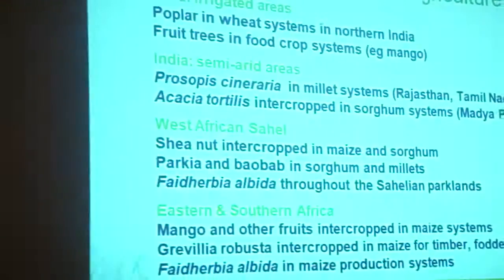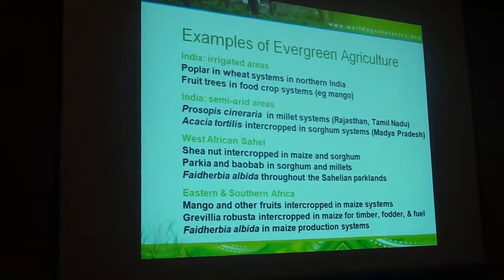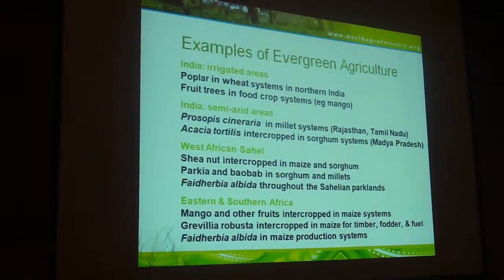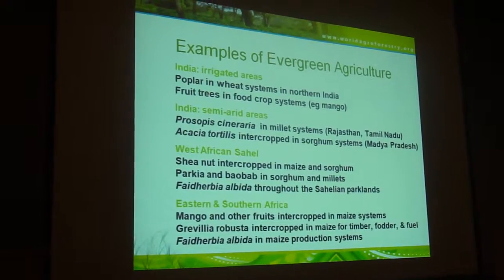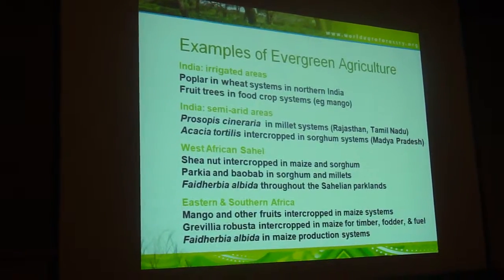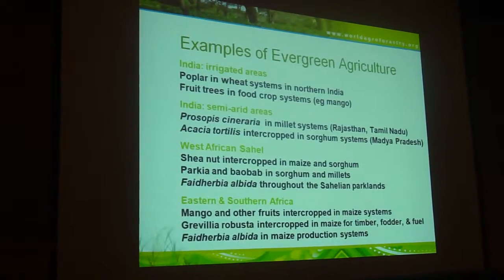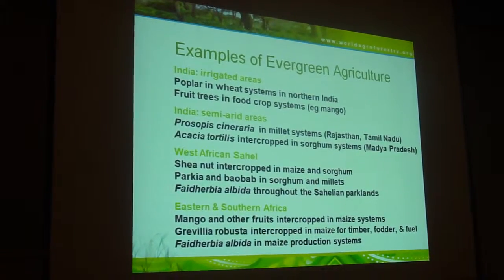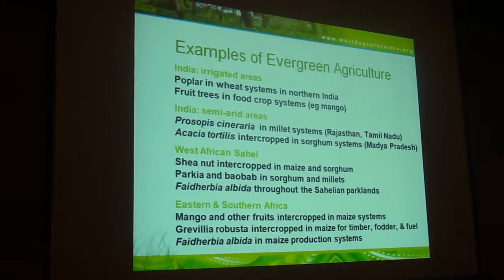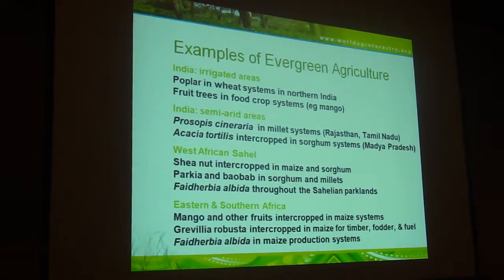There are many different examples of evergreen agriculture, and I just threw up a few here to give you a sprinkling of those types of systems that are quite common in some parts of the tropics where we work, but there are many, many more such systems as well, dealing with fertilizer trees, fruit trees, timber trees, cash crop trees, fodder trees, and others integrated directly into food crop production systems.